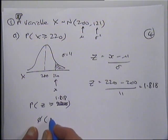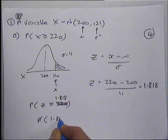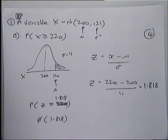If it was less than I could just write down phi of 1.818, but since we want greater than, we have to do one minus phi. Because the area under the whole curve is one, if you ever do a greater than you need to do a one minus.